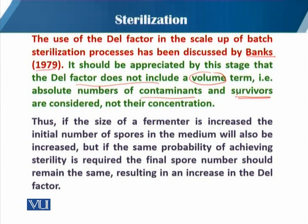So if the size of the fermenter is increased, the initial number of spores in the medium will also increase. If a medium contains a uniform amount of viable cells and we increase the volume of the medium in the same fermenter, that will also multiply and increase at the same rate. If the same probability of achieving sterility is required, the final spore number should remain the same, resulting in an increase in the DEL factor.